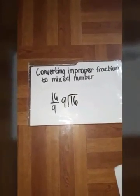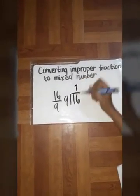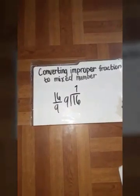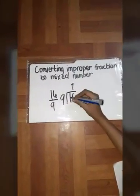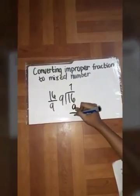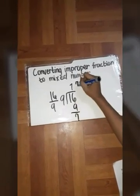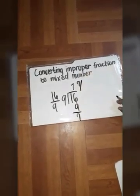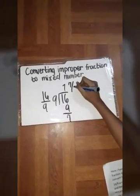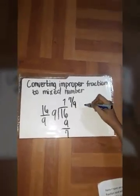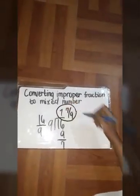And the answer is 1. The remaining number is our numerator. Copy the denominator. So the result is 1 and 7 over 9.